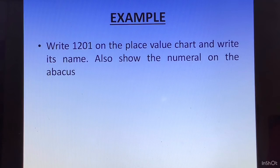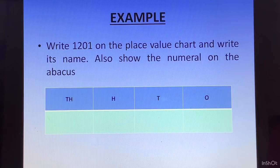Write 1201 on the place value chart and write its name. Also show the numeral on the abacus. In the ones place we will write 1, tens place we will write 0, hundreds place we will write 2, and in the thousands place we will write 1. The number name is going to be one thousand two hundred one.